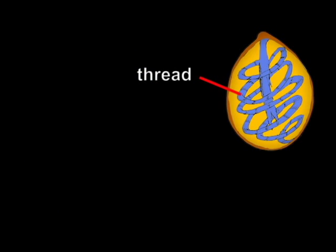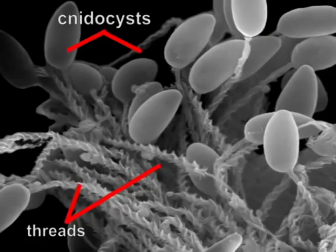These organs contain a coiled thread, often bearing spines. Here, discharged cnidocysts and an everted thread are shown.